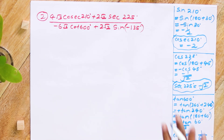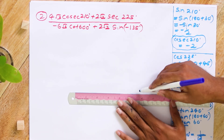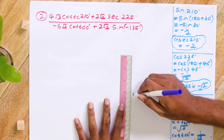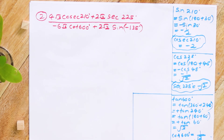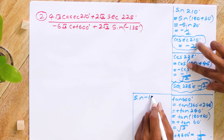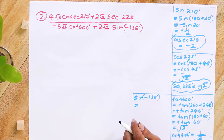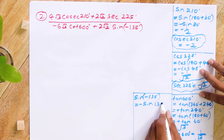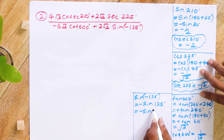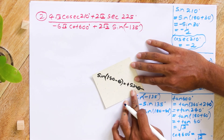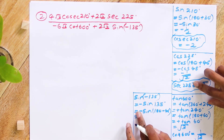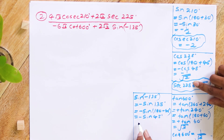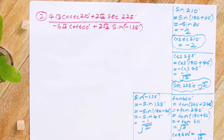Now, sin(-135°). Since sin(-θ) = -sin θ, sin(-135°) = -sin 135°. And sin 135° = sin(180° - 45°), with sine(180° - θ) = +sin θ, gives sin 45°. But with the negative in front, it becomes -sin 45° = -1/√2.